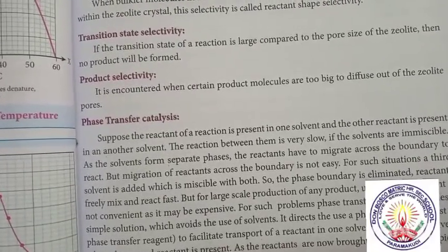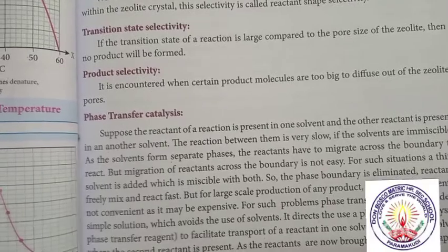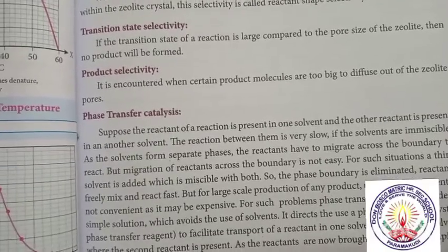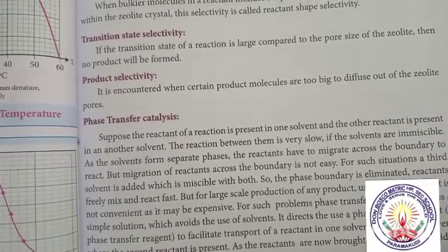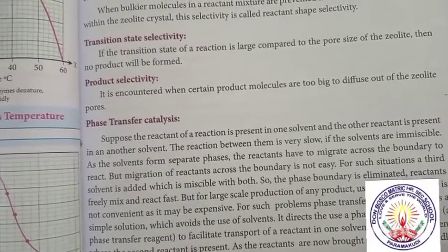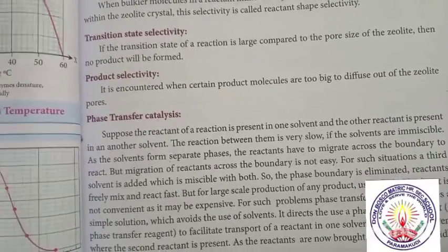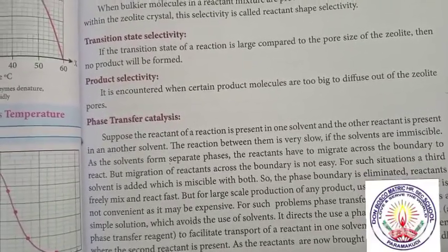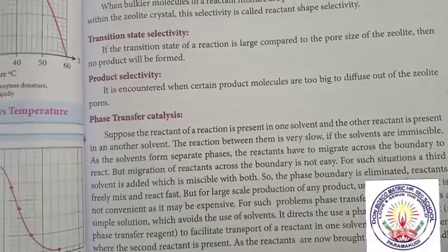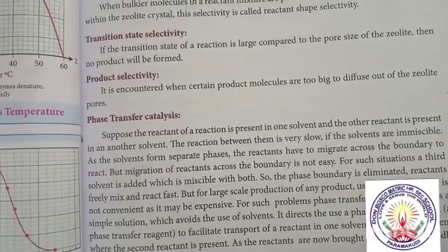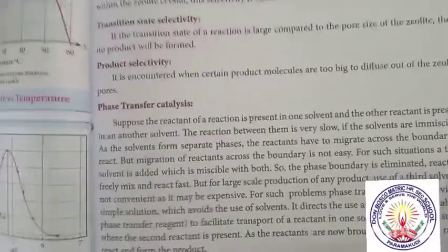If the solvents are immiscible, the solvents form separate phases and the reactants have to migrate across a boundary to react. But migration of reactants across a boundary is not easy. For such situations, a third solvent is added which is miscible with both, so the phase boundary is eliminated and reactants freely mix and react fast.